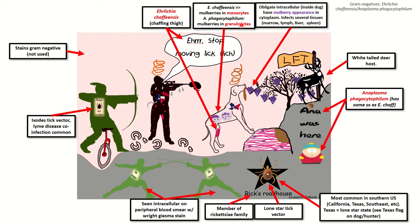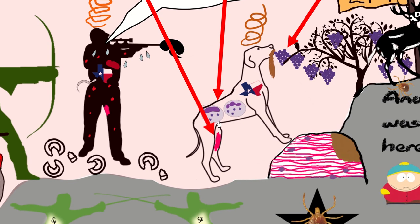The big difference between these two organisms, for our purposes, is the way in which you diagnose them. Both get the Righ-Gamsa stain, but where the mulberry intracellular inclusions are found depends on which bug it is. If it's Ehrlichia chaffiensis, the inclusions will be within the monocytes. You can see the monocyte there with that mononuclear nucleus and the mulberries inside.